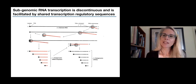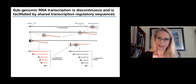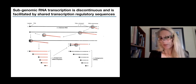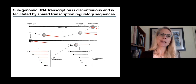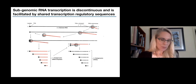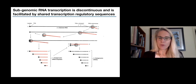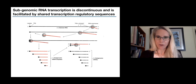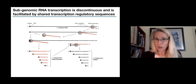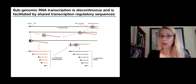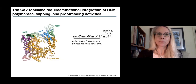This discontinuous transcription has interesting consequences: because of all this polymerase jumping, coronaviruses have astronomically high rates of recombination — estimates of something like 25% — whereas recombination in other positive-sense RNA viruses is basically vanishingly small. This likely plays into the evolution of these viruses and potentially why they can maintain such enormous genomes.